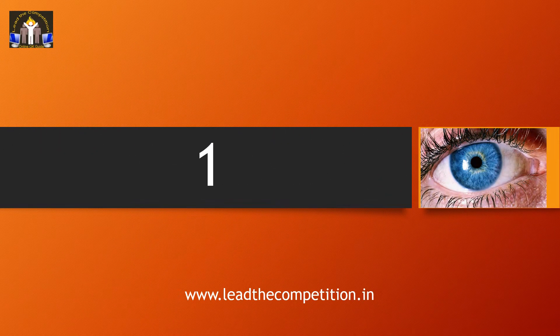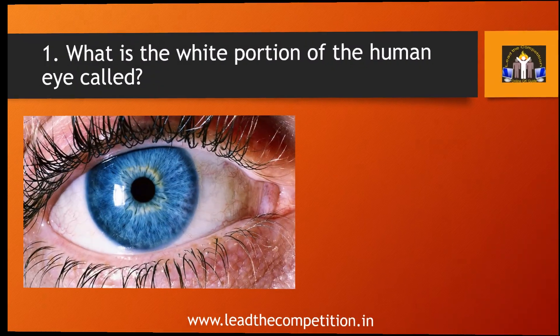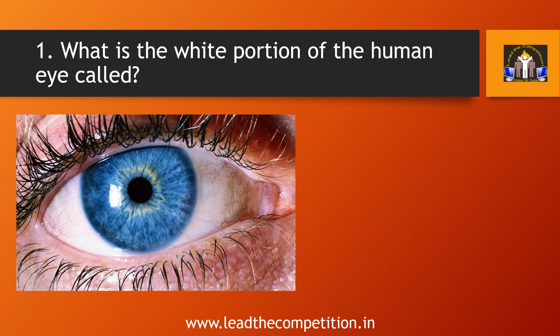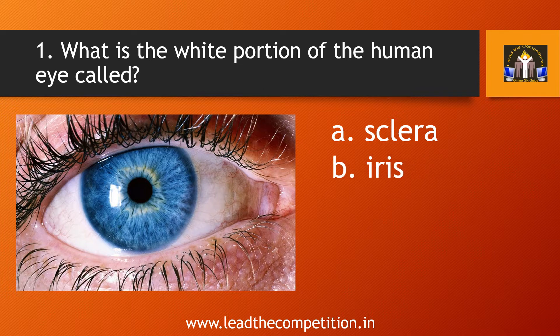Question number 1. What is the white portion of the human eye called? A. Sclera, B. Iris, C. Retina, or D. Cornea.